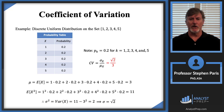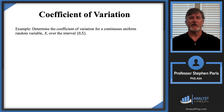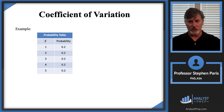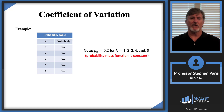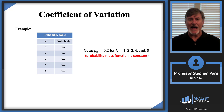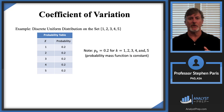Now let's change the example. Instead of a discrete uniform distribution, let's determine the coefficient of variation for a continuous uniform distribution X over the interval from zero to five. In the discrete case over the set {1, 2, 3, 4, 5}, all of the probability mass function values were constant — that's exactly what defines a uniform distribution. Now I'm in the continuous case.